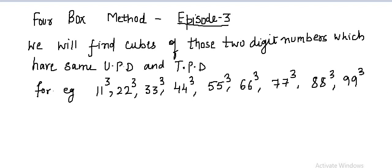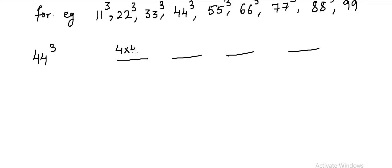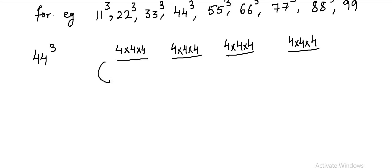Let us take a random example of 44 cube. In order to calculate 44 cube, you will make 4 boxes. In all the 4 boxes, you have to take 4 × 4 × 4, because we are calculating 44 cube, so 4 is the digit.